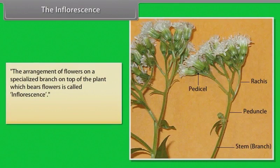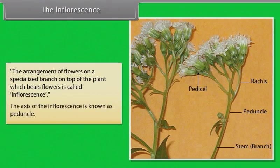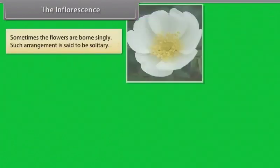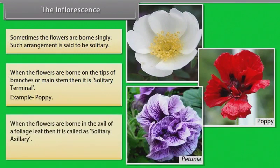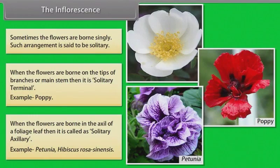The inflorescence is the arrangement of flowers on a specialized branch on top of the plant which bears flowers. The axis of the inflorescence is known as the peduncle. Sometimes the flowers are born singly — such arrangement is said to be solitary. When flowers are born on the tips of branches or main stem, it is solitary terminal — example: poppy. When flowers are born in the axil of a foliage leaf, it is called solitary axillary — example: petunia, Hibiscus rosa-sinensis.